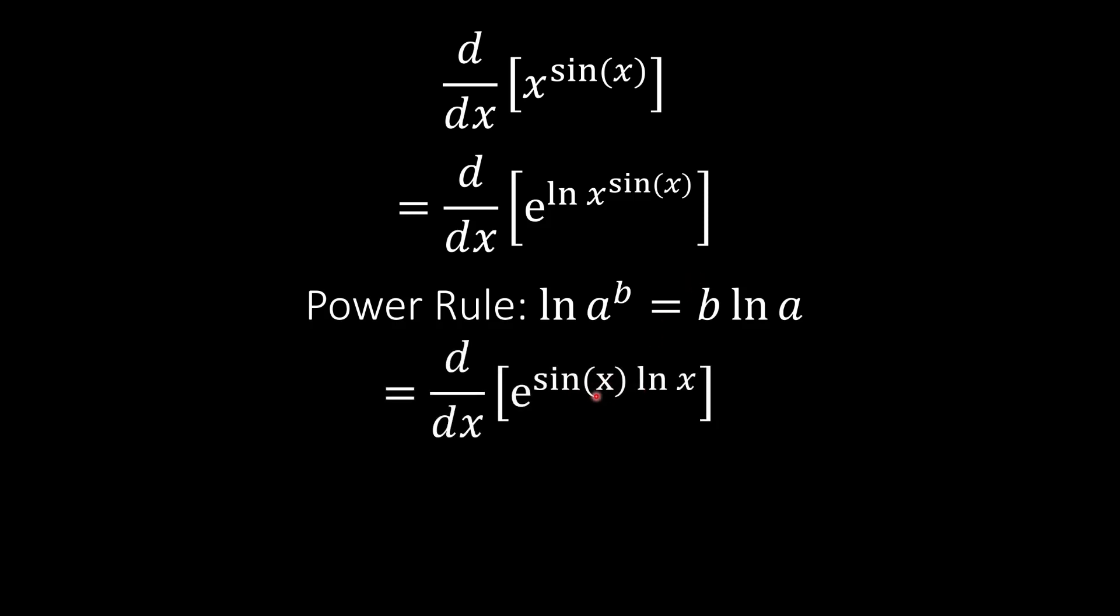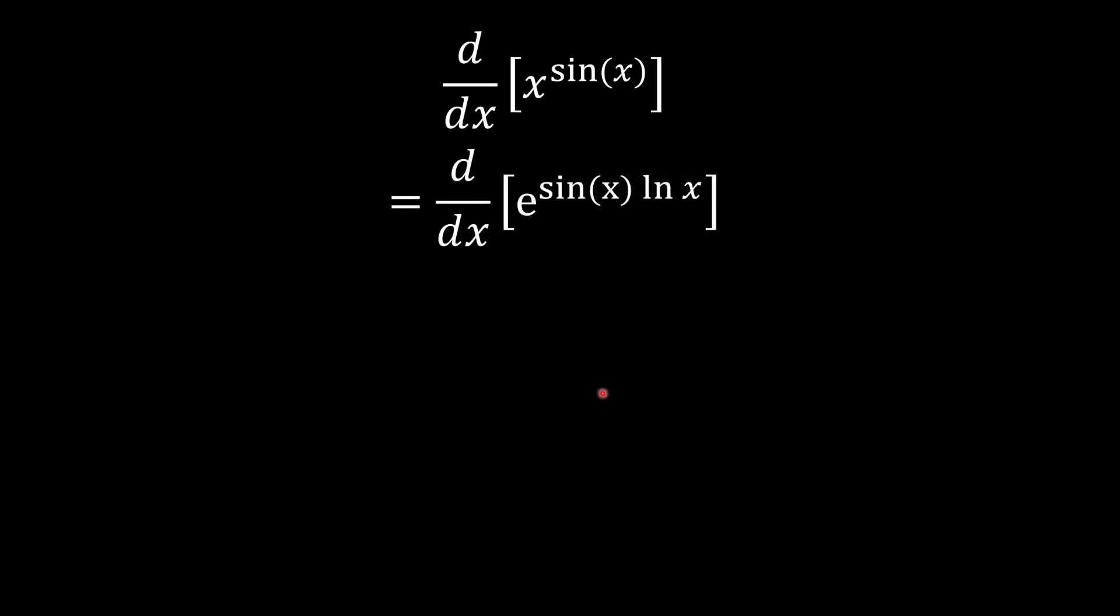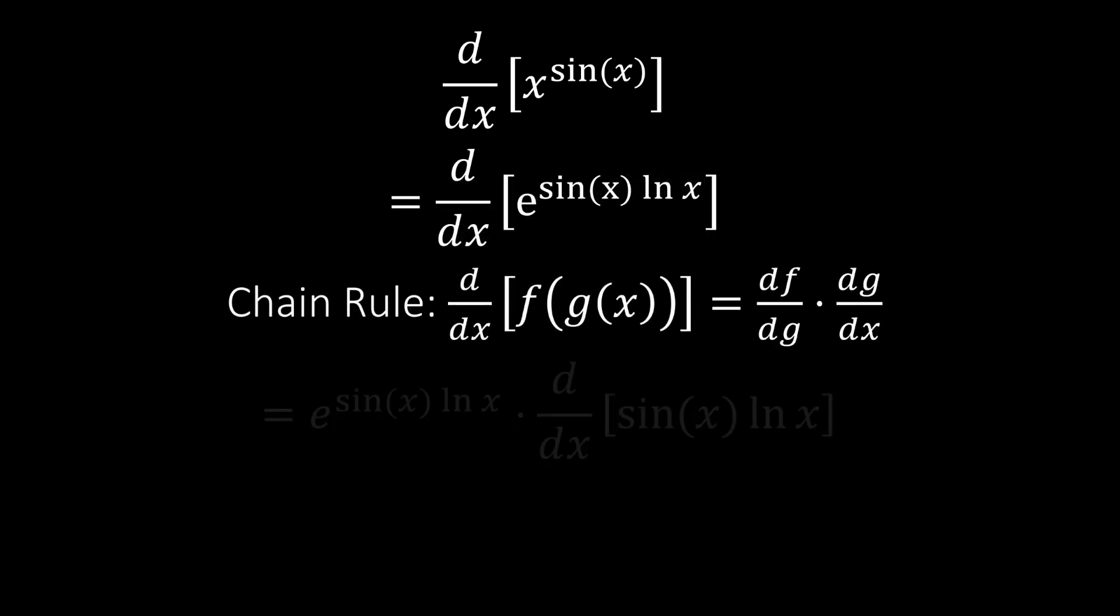As you can see, we brought this sine term to the front. Now we can apply the chain rule. First, the e term, nothing is going to change. Then we're going to do the derivative of sine x and ln x.